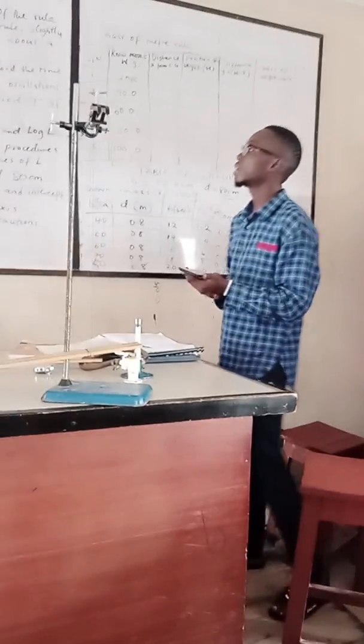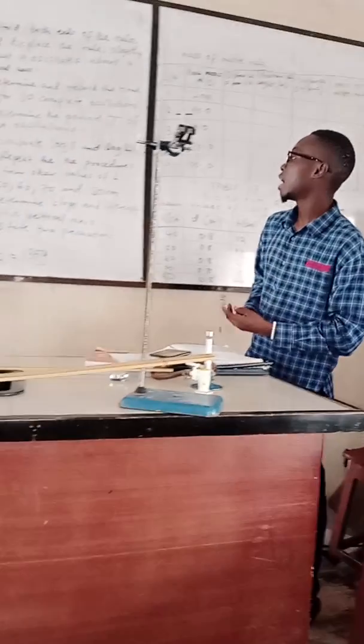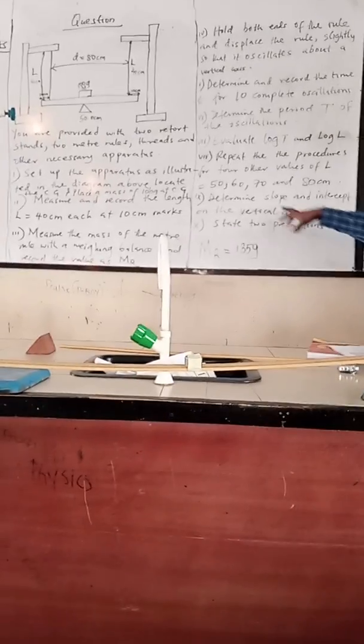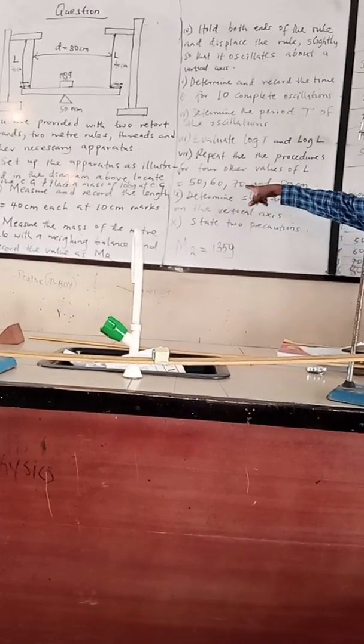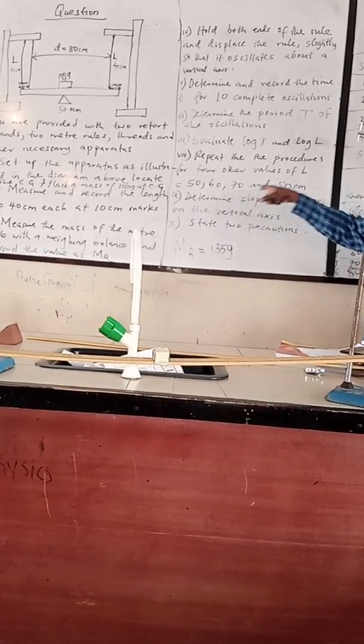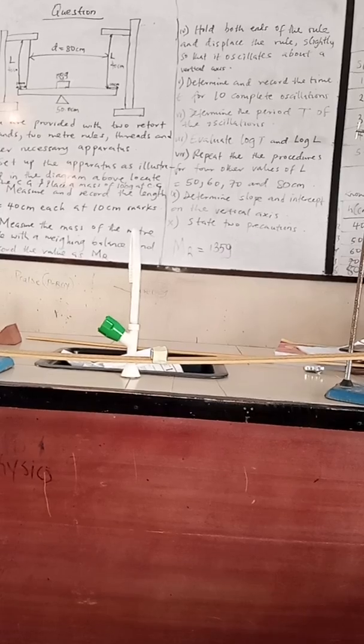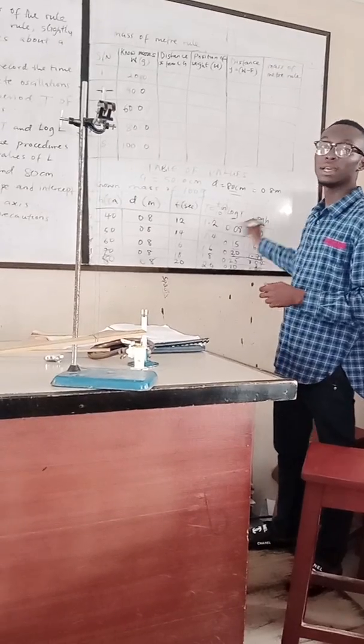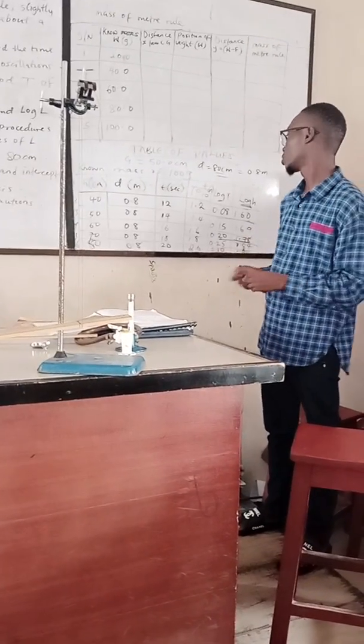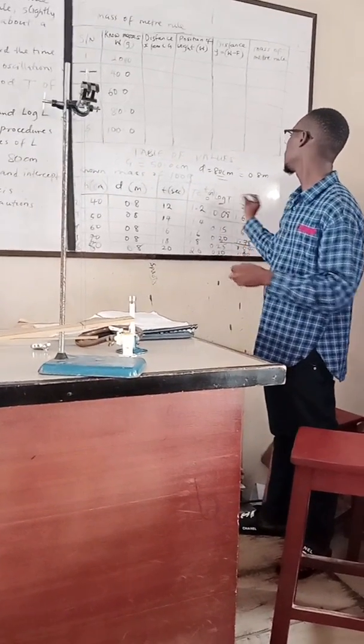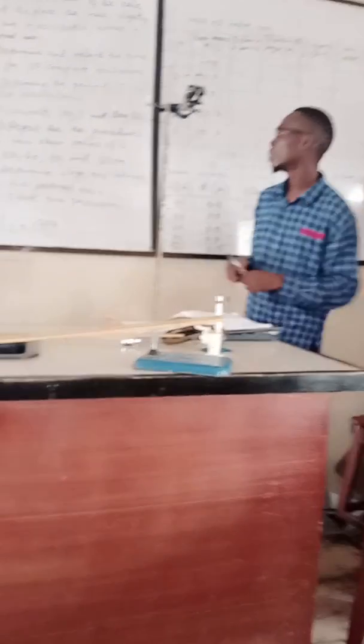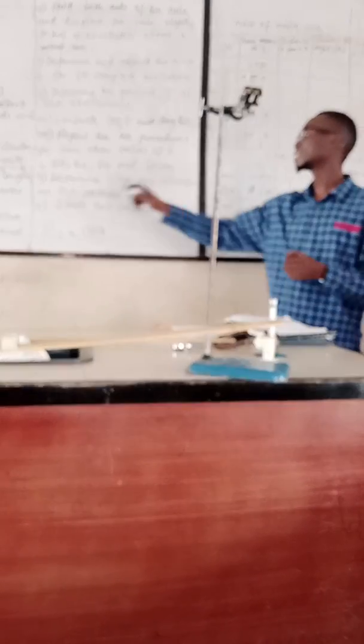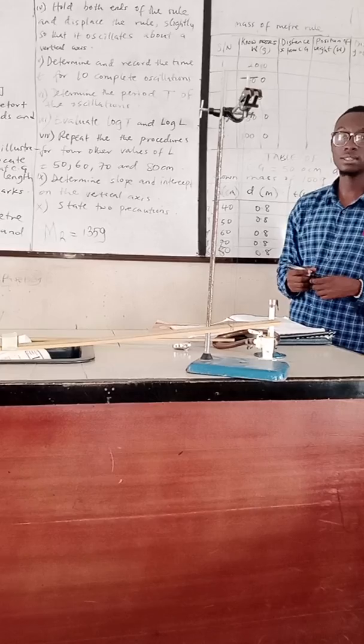They say again that we should repeat the procedure for 50, 60, 70 and 80 and so on. Then they now say that we should plot a graph of log T against log h. So that is what I am going to do. We plot a graph of log T against log h, then also determine the slope and the intercept on the vertical axis. And also they say we should state two precautions.